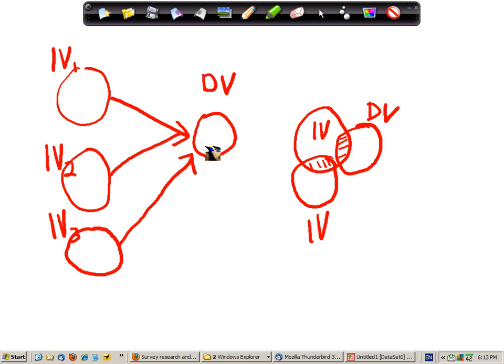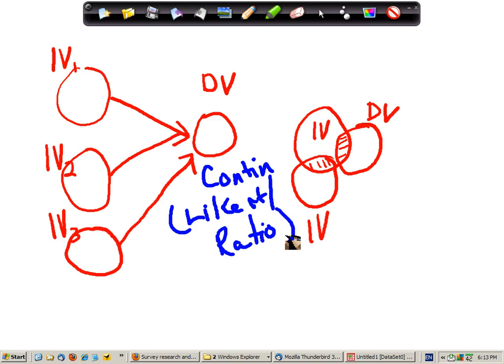And this means that if we go back to our model, then we need a dependent variable which is continuous. In other words, it's at least likert or ratio level of measurement.